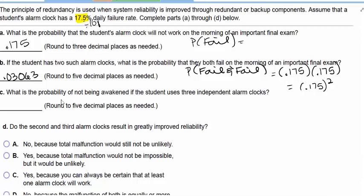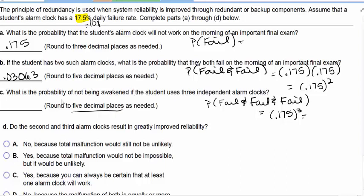What is the probability of not being awakened if the student uses three independent alarm clocks? That would be probability of fail and fail and fail, which is 0.175 times 0.175 times 0.175, rounded to five decimal places: 0.00535.